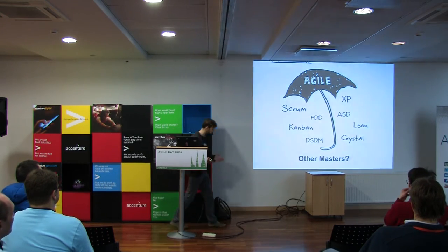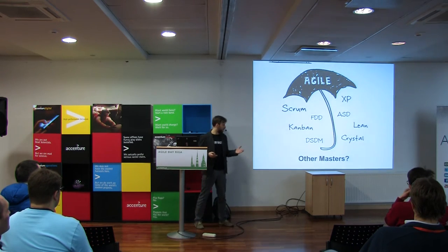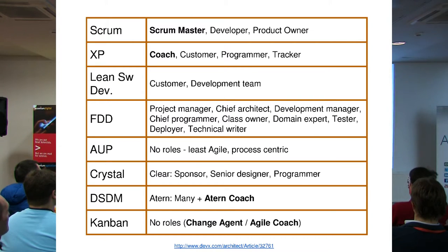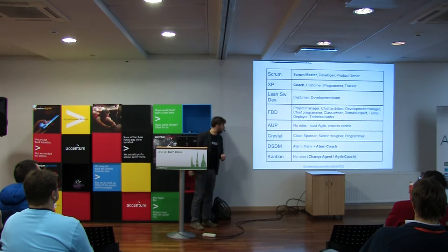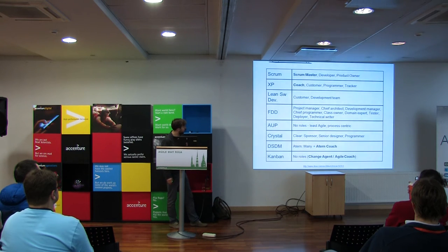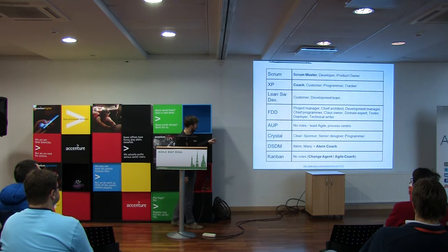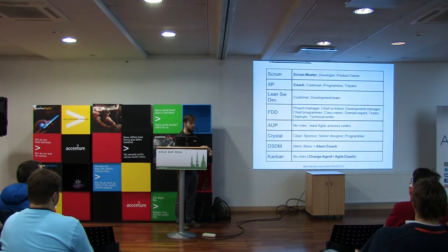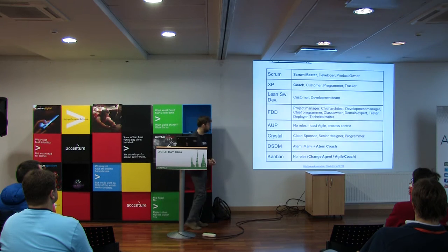When I was preparing for this, I was interested in understanding what other 'masters' exist in other Agile methods. I did some research and found a table created based on an interesting article. I put in bold those methods which have something like a Scrum Master — it's about 50-50. We have Scrum with a Scrum Master, XP with a Coach, DSDM with a Coach, and Kanban with a change agent or Agile Coach. Others have either a Project Manager or nobody — just developers.